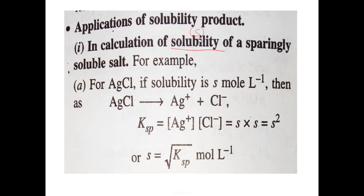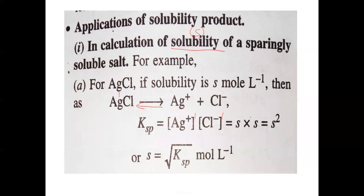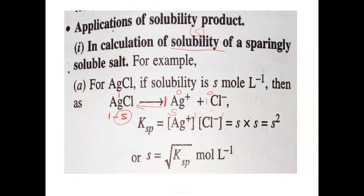Solubility S can be calculated if you know the solubility product. For AgCl, if solubility is S moles per liter, then AgCl gives Ag⁺ and Cl⁻ in a reversible condition — it is a sparingly soluble salt. Initially we take one mole of AgCl and zero for Ag⁺ and Cl⁻. S moles per liter dissolve, so S moles of Ag⁺ and S moles of Cl⁻ are formed at equilibrium.